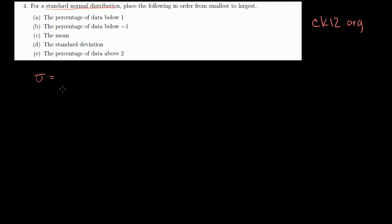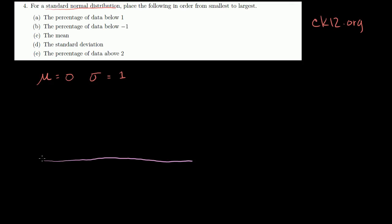A standard normal distribution is one where the mean — mu for mean — is equal to 0, and the standard deviation is equal to 1. Let me draw that standard normal distribution. So let me draw the axis and a nice looking bell curve. This is a standard normal distribution, and the mean, the center point right here, is not skewed — the mean is going to be 0 right there.